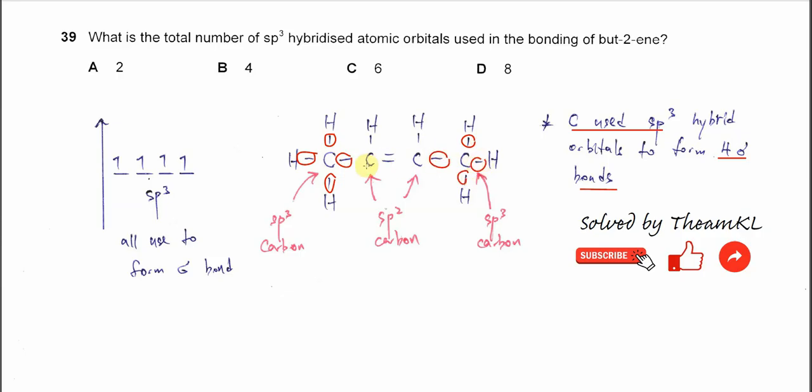These two carbons are sp2 carbons. They will use the sp2 hybrid orbitals to form the sigma bonds here, here, and here. So the total number of sp3 hybridized atomic orbitals used in the bonding will be eight total: one, two, three, four, five, six, seven, eight. So the answer is D.